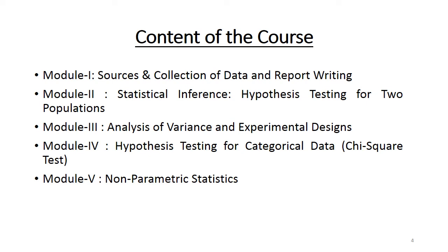Content of the course. This course contains five different modules. The first one is Sources and Collection of Data and Report Writing. The second module is Statistical Inference, which includes hypothesis testing for two populations. The third module is based on Analysis of Variance and Experimental Designs. The fourth module is based on Hypothesis Testing for Categorical Data. The fifth module is based on Non-Parametric Statistics. These may be new terms for you, but they are all part of the research domain, which is very important for any kind of research.